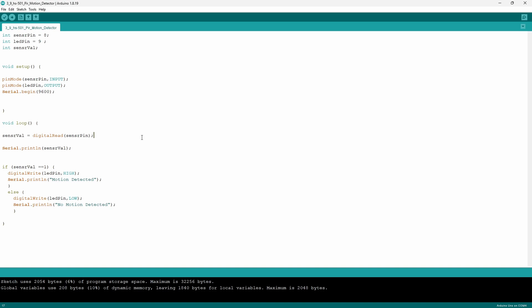Now moving on to the void loop I start off by actually storing the value of the output into the variable sensor value. I do this by the command digital read sensor pin.